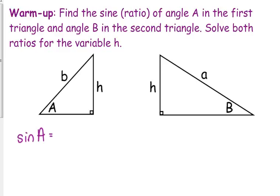Okay, so the sine of angle A is the opposite over the hypotenuse. When we solve that for h, we multiply both sides by the little b, so we get b sine of A is equal to h.